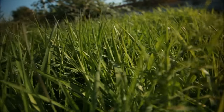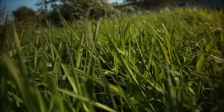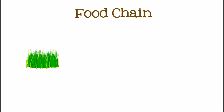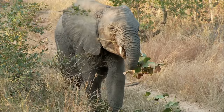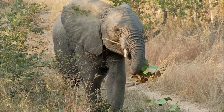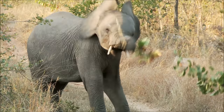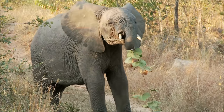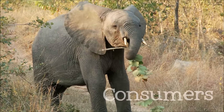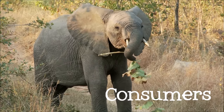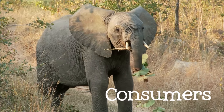Every food chain must begin with a producer — for example, grass. That's because animals cannot create their own food. They must eat or consume energy from other sources. That's why animals are called consumers.